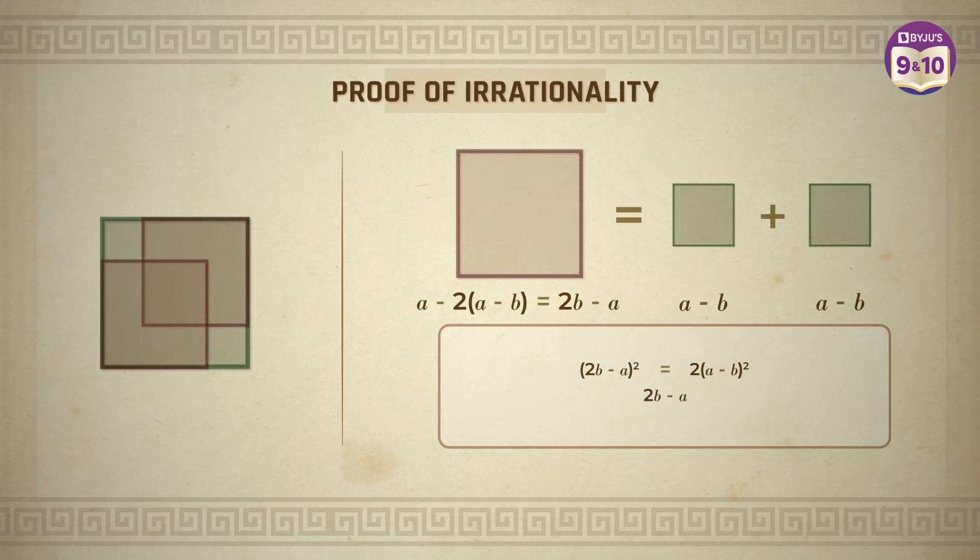So 2b minus a would be equal to root 2 times a minus b. So we can say that root 2 is equal to 2b minus a upon a minus b which is not equal to a by b.